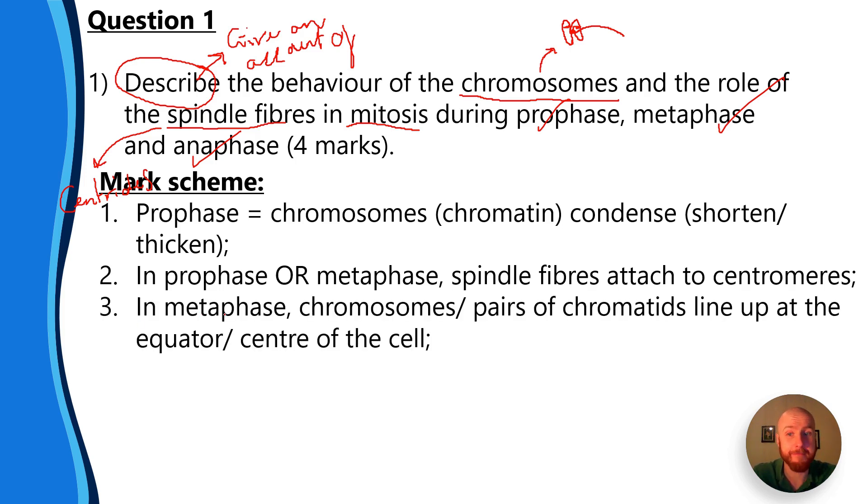Your third mark comes for saying that in metaphase, chromosomes or pairs of chromatids line up at the equator of the cell. Now in the top right I'm just going to draw what that looks like, so you have your chromosomes lined up along the equator of the cell, and then we've got our spindle fibers attaching to the centromeres originating from the centrioles at opposite poles.